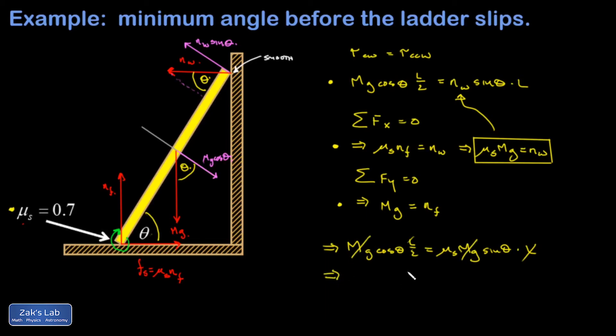Sine theta times l, and the l's are going to cancel out and the mg's are going to cancel out. And I would like to solve for sine theta over cosine theta here because that's the tangent and it's nicer than the cotangent, so I'm going to move all the other stuff to the left hand side and I have 1 over 2 mu_s equals sine over cosine which is tangent theta.